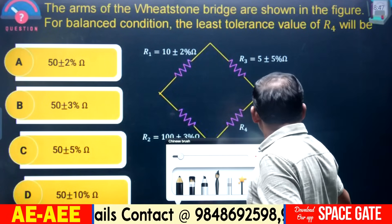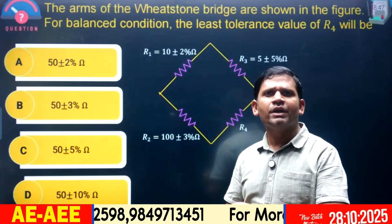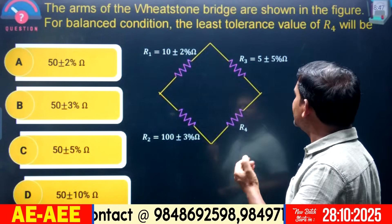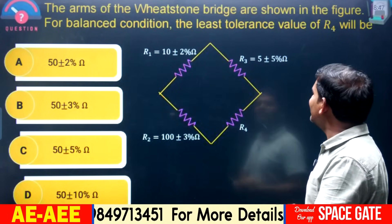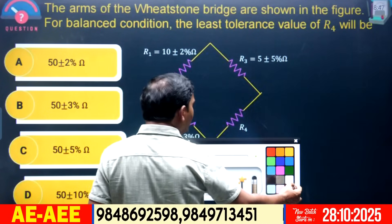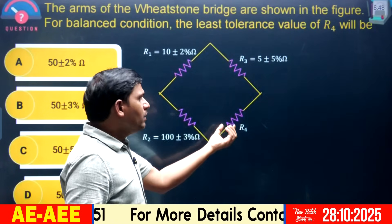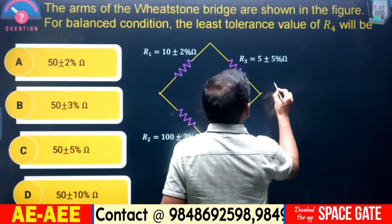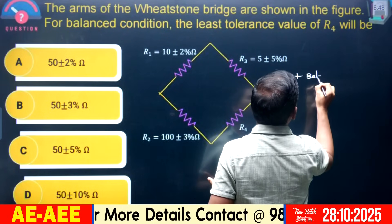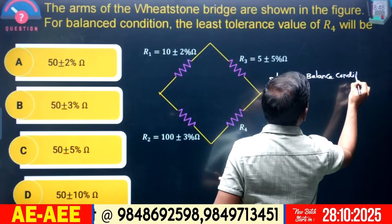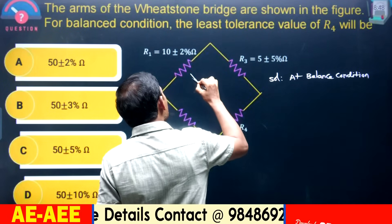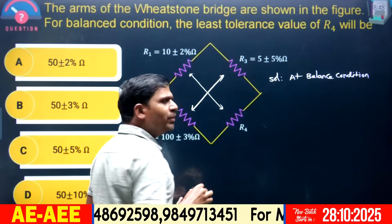Now concentrate on error propagation, or error due to combination of quantities — another most important model in error analysis. The arms of the Wheatstone bridge are shown in the figure. For the balanced condition, find the least tolerance value of R4. At balanced condition, the product of opposite resistances are equal: R1 × R4 = R2 × R3.